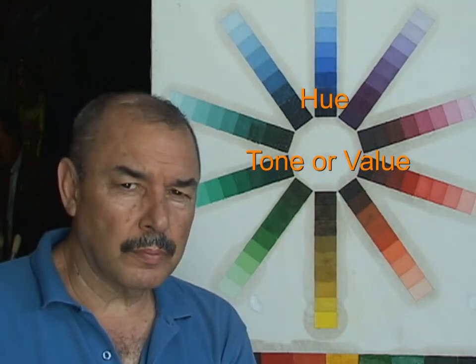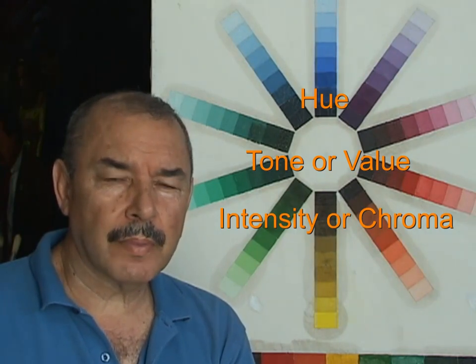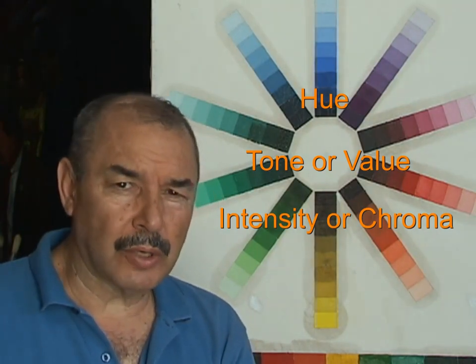If instead of white, such a surface were another color, bluish violet would mix optically with that color. This vibrating phenomenon was used extensively in the second half of the 19th century during French Impressionism, especially in pointillism by Georges Seurat and Paul Signac. Color has three properties: hue, value or tone, and intensity or chroma.